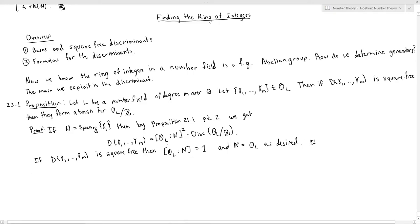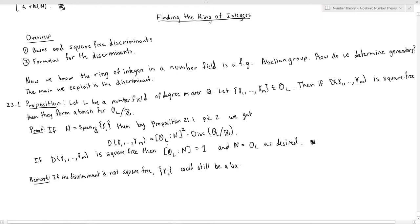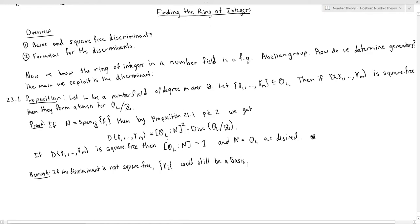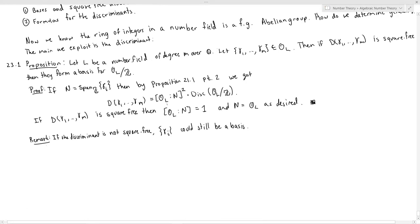Just to warn you: if the discriminant is not square-free, it can still be the case that you have a basis. This is not an if-and-only-if statement — the collection of gamma_i's could still be a basis even when the discriminant is not square-free.